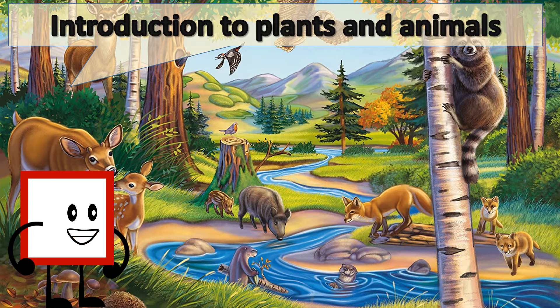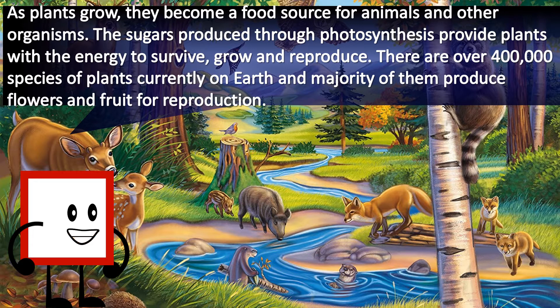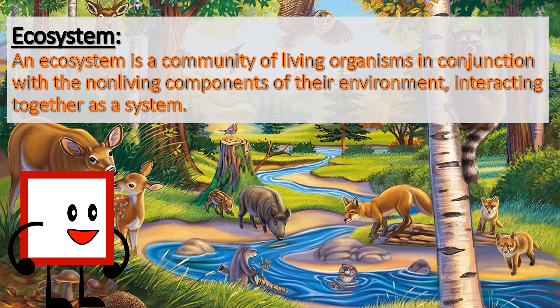Introduction to plants and animals. As plants grow, they become a food source for animals and other organisms. The sugar produced through photosynthesis provides plants with the energy to survive, grow and reproduce. There are over 400,000 species of plants currently on earth, and a majority of them produce flowers and fruit for reproduction. An ecosystem is a community of living organisms in conjunction with the non-living components of their environment, interacting together as a system.